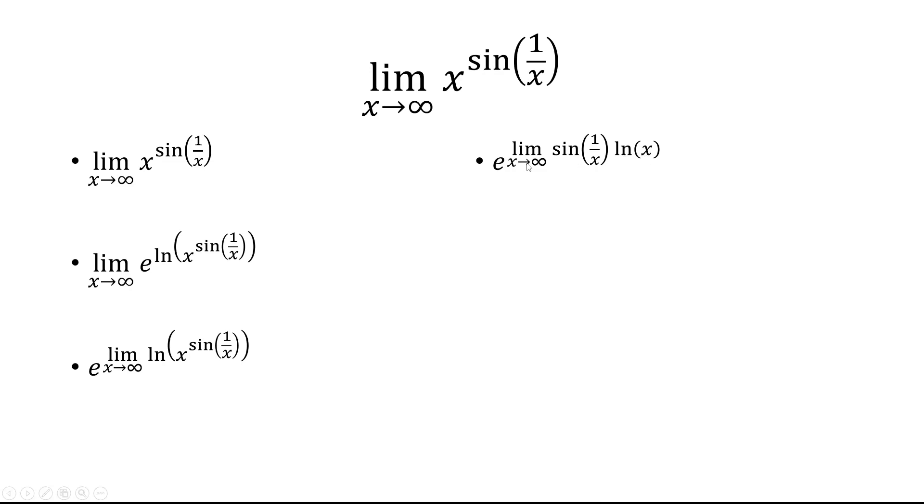Now as x approaches infinity, we have 0 times infinity, so that's not going to work. So instead, what we're going to do is divide sine 1 over x with 1 over x and divide natural log of x with x. I'm allowed to do that because these x's can cancel, so I didn't really change anything.